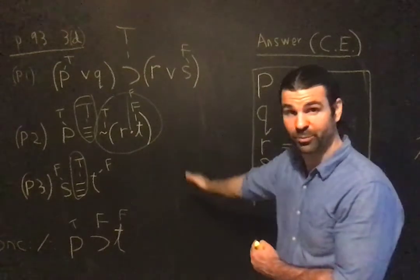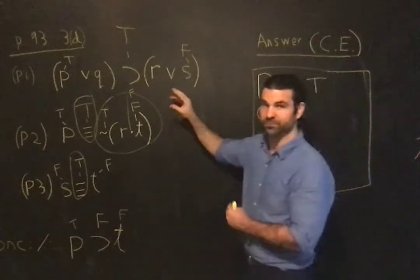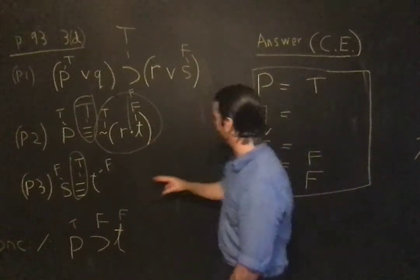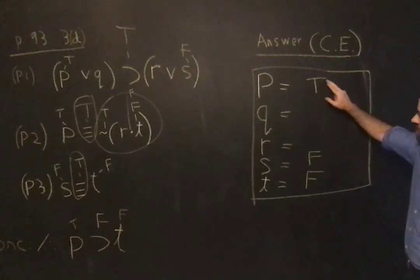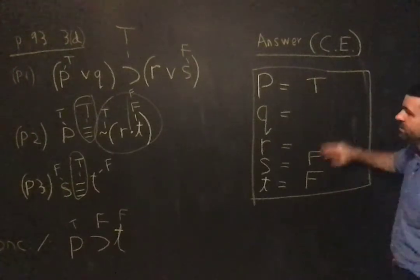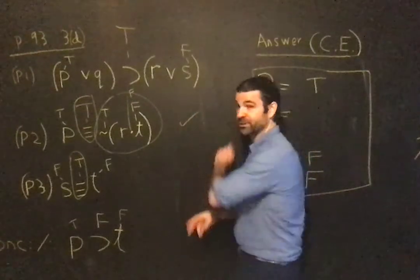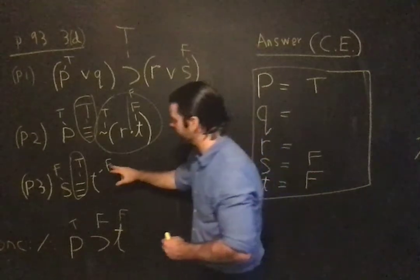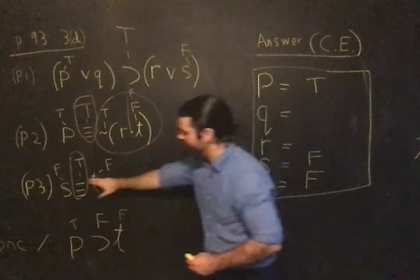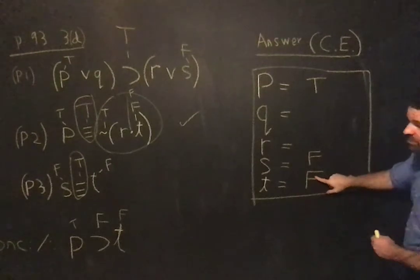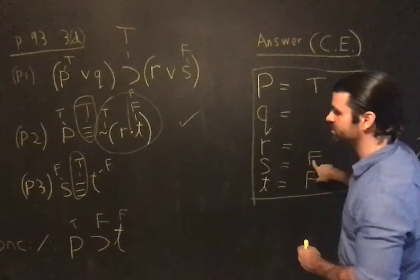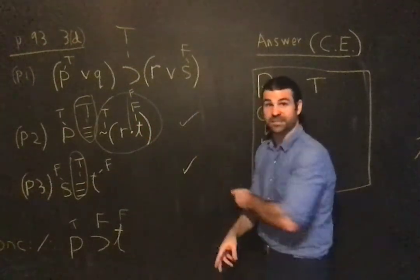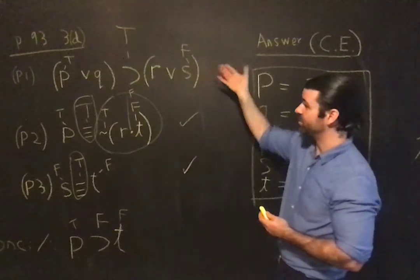Remember, you're trying to make all the premises true and the conclusion false. This assignment we've got so far — T and P — suffices for keeping that true. S had to be false; that makes the biconditional true, so we've succeeded in making premise 2 true. It all comes down to now premise 1.